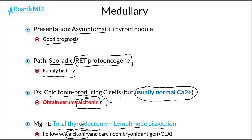In addition to calcitonin, we can also follow CEA, also known as carcinoembryonic antigen. But really, the highest-yield takeaways from medullary carcinoma of the thyroid are its relationship to the multiple endocrine neoplasia syndromes via the RET proto-oncogene, as well as the fact that these patients classically will have an elevated level of calcitonin.